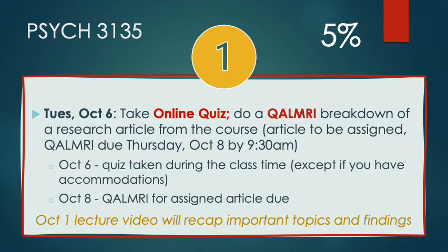So on October 6th, which is two weeks from today, we'll have an online quiz during our meeting time. This is a quiz that you know you're going to need to take it during that time. After you finish the quiz, you'll be assigned an article from the course and you'll complete a QOMRI breakdown on that article, and you're going to do this on your own time. You'll have the opportunity to begin on Tuesday the 6th of October — you'll take the quiz and then get the article, but your QOMRI won't be due until Thursday, the Thursday before class.